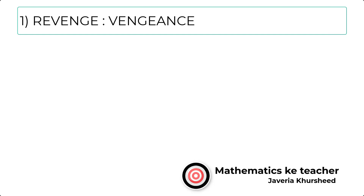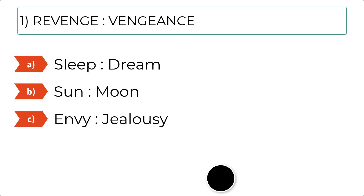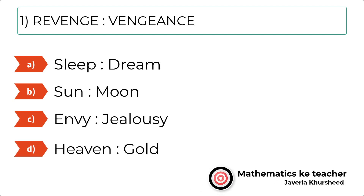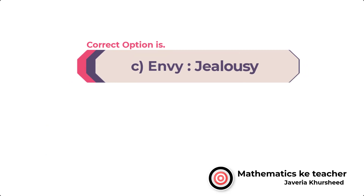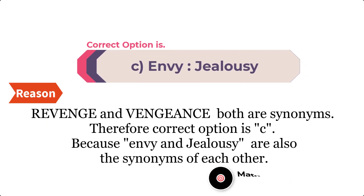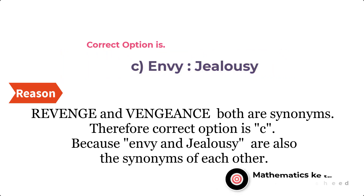Question 1: Revenge, Vengeance. A. Sleep, Dream. B. Sun, Moon. C. Envy, Jealousy. D. Heaven, Gold. The correct option is C — Envy, Jealousy. Since Revenge and Vengeance are both synonyms, therefore the correct option is C, because Envy and Jealousy are also synonyms of each other.